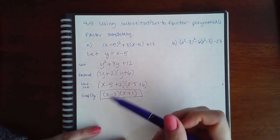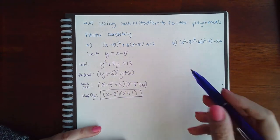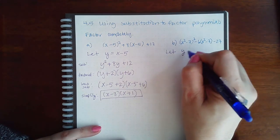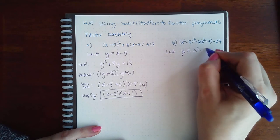And this is just a shorter method than doing all of that. So similarly here, we're gonna let—it's x again, so I'm gonna use y again. Let y equal what is being squared, so x squared minus 7.